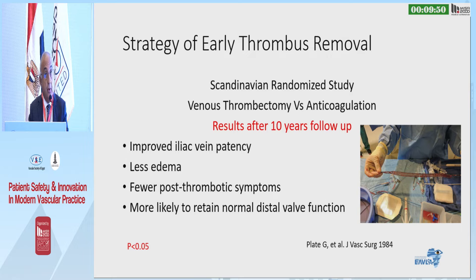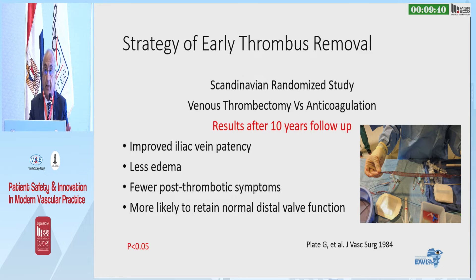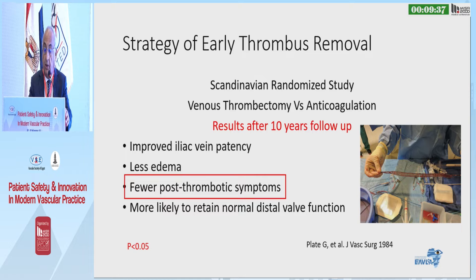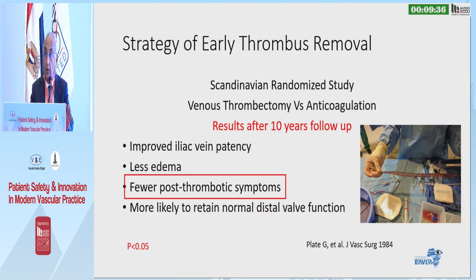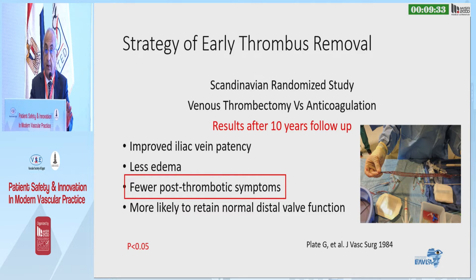The roots of early thrombus removal come from the Scandinavian work in the early 80s. They used to perform surgical thrombectomy for iliac vein thrombosis, and they had 10 years of follow-up on their patients. They showed that early venous thrombectomy using surgical means would cause significant reduction in post-thrombotic syndrome.